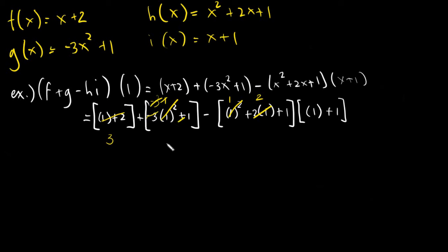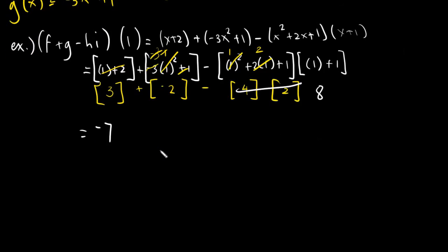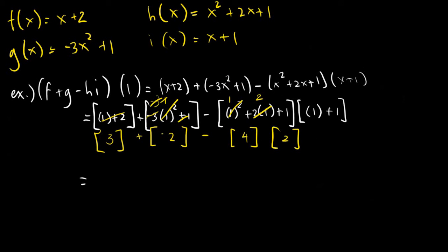Negative 3 plus 1 gives negative 2. Then we have minus: 1 squared plus 2 times 1 plus 1 — that gives 1 + 2 + 1 which is 4. And bracket (1 + 1) gives 2. So evaluating further: 3 + (−2) − (4 × 2). That means 3 + (−2) − 8, using the calculator, gives negative 7. So this is our answer for (f + g − h·i)(1) = −7.